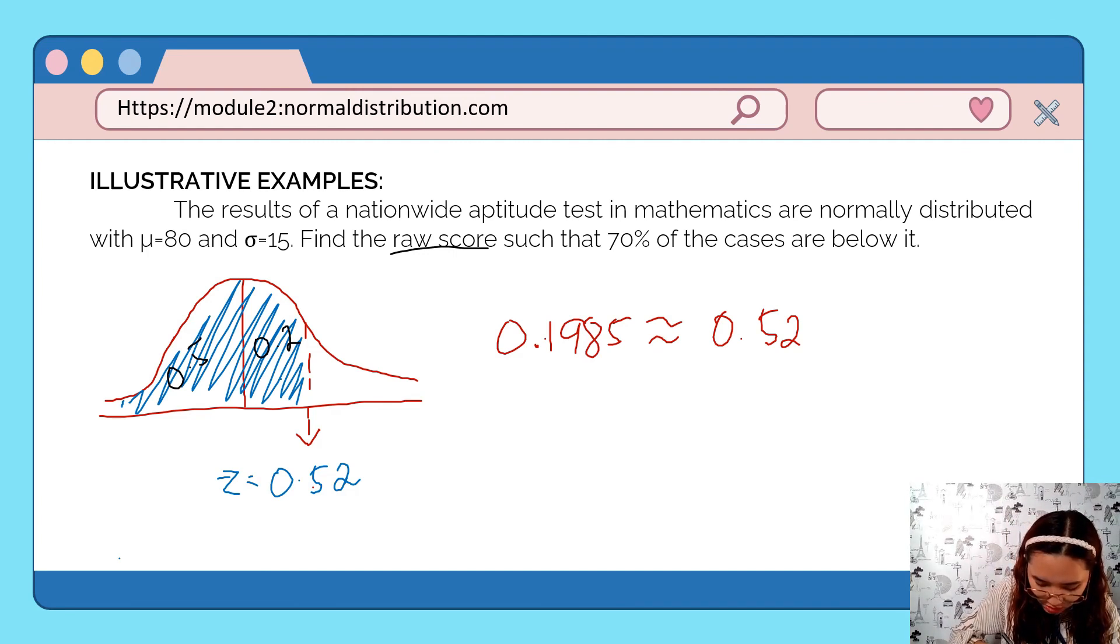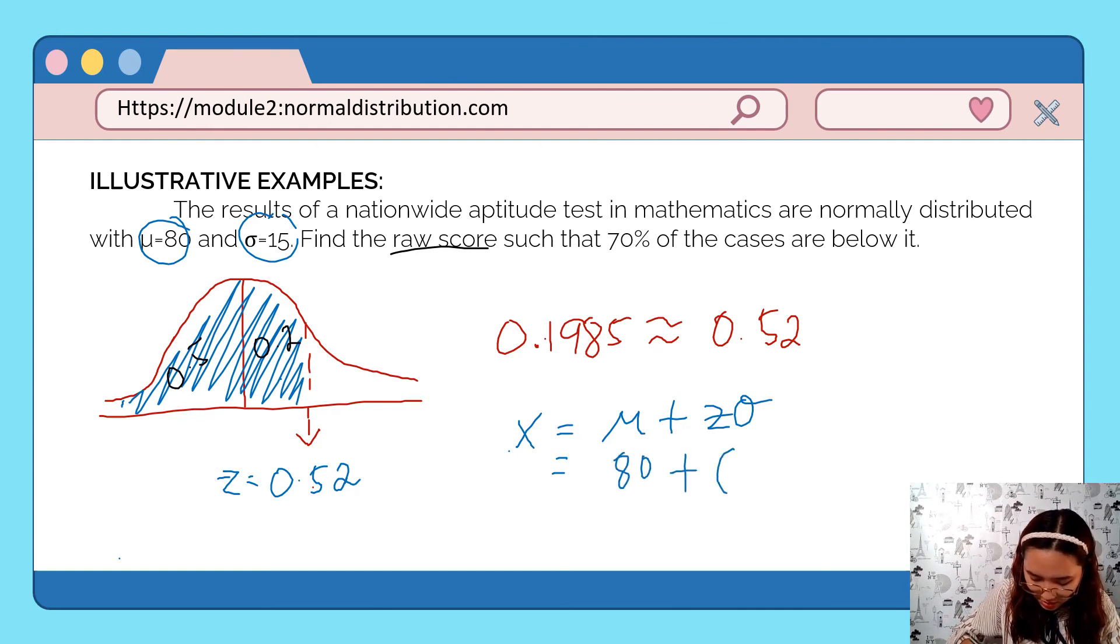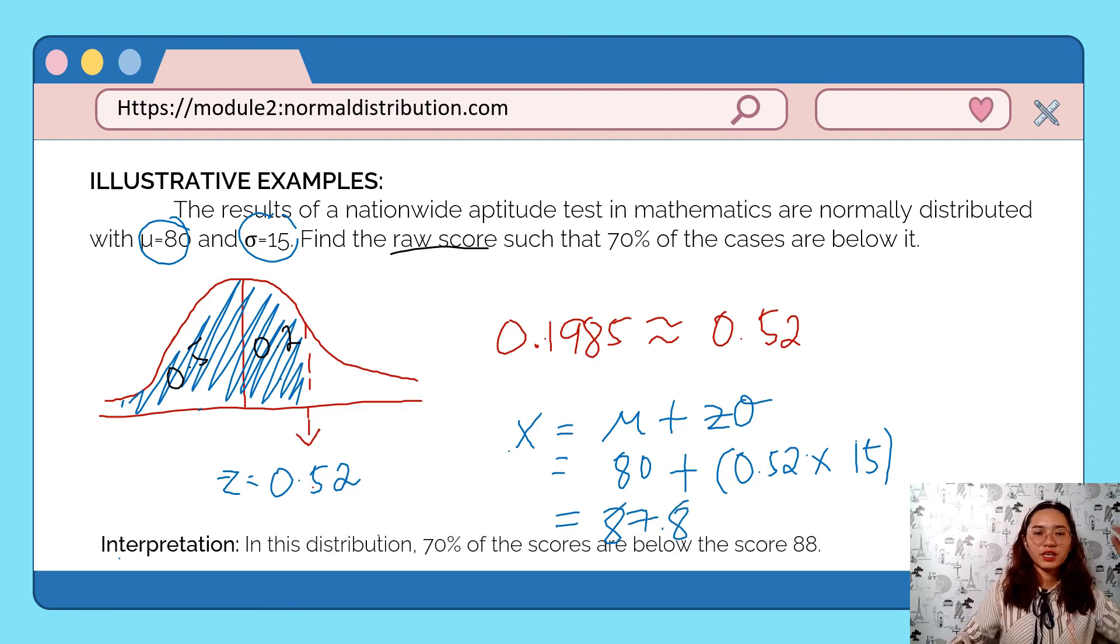How do we do that? We use the formula: X equals the mean plus z times standard deviation. Now, our given mean is 80 and standard deviation is 15. So 80 plus our z which is 0.52 times 15 equals 87.8. Then for this distribution, 70% of the scores are below the score 87.8 or approximately below the score 88.